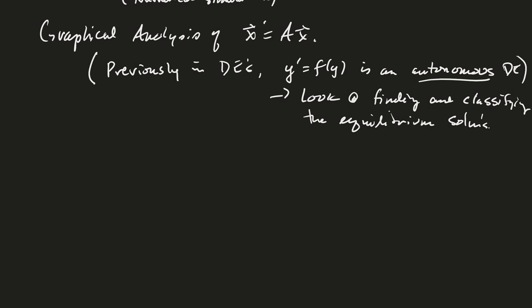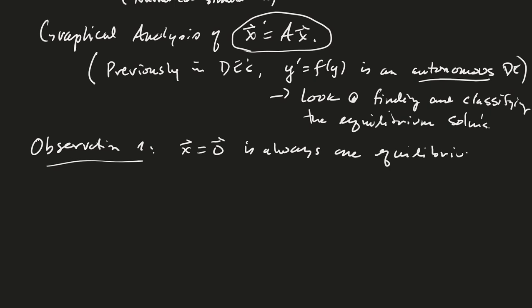Okay, so we're going to get some new classifications now. So you'll notice that when we're doing x prime equals ax, so I might just take a note, observation one, the origin, x equals zero, is always one equilibrium solution. Do you have any others?